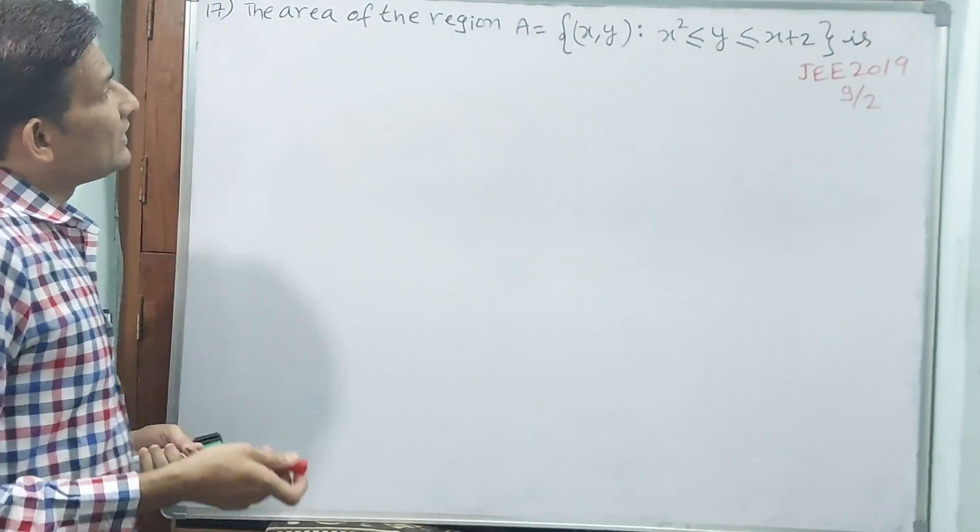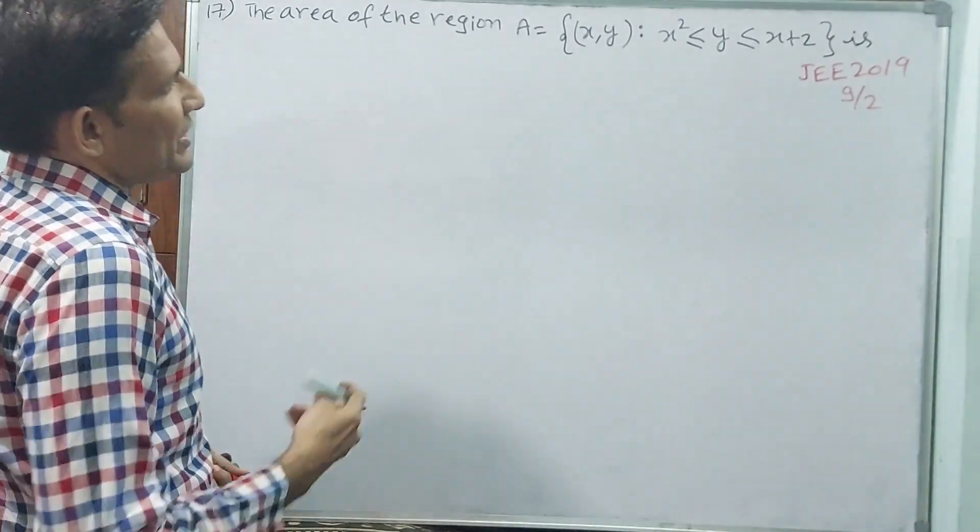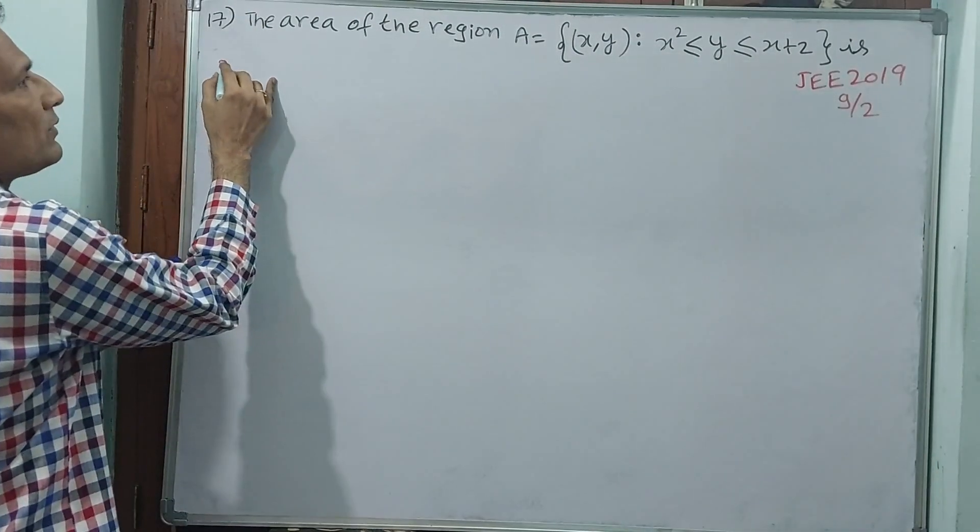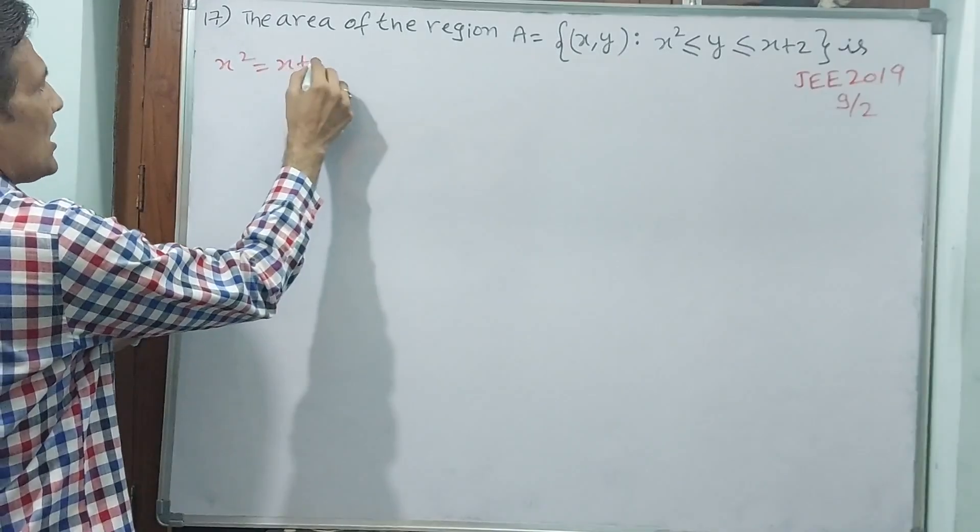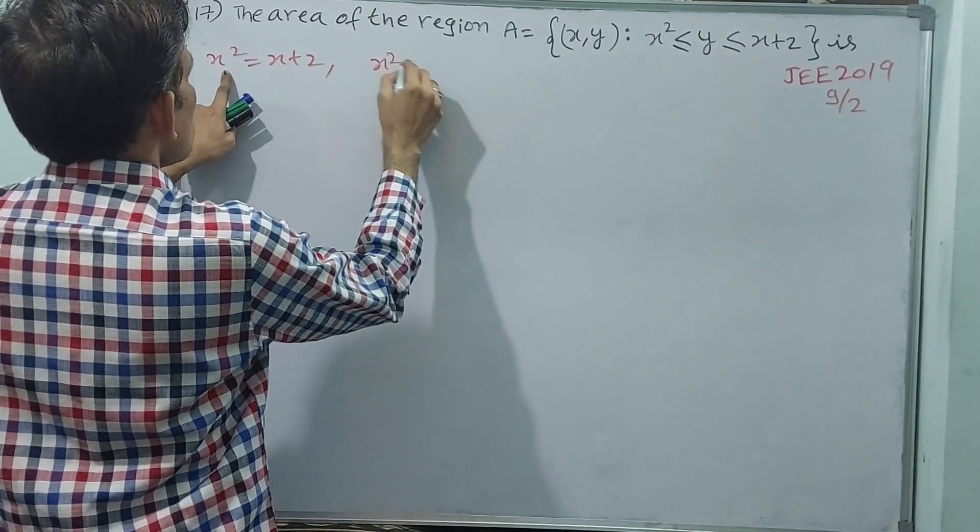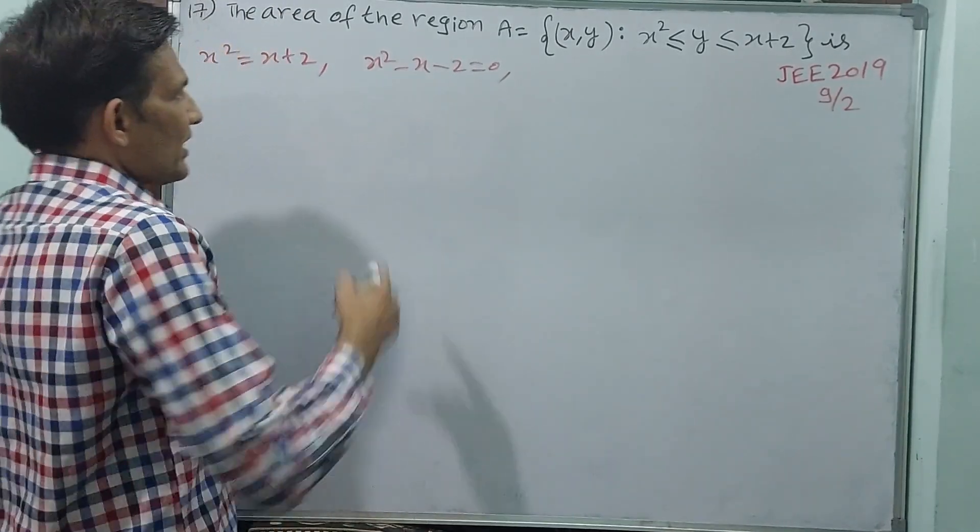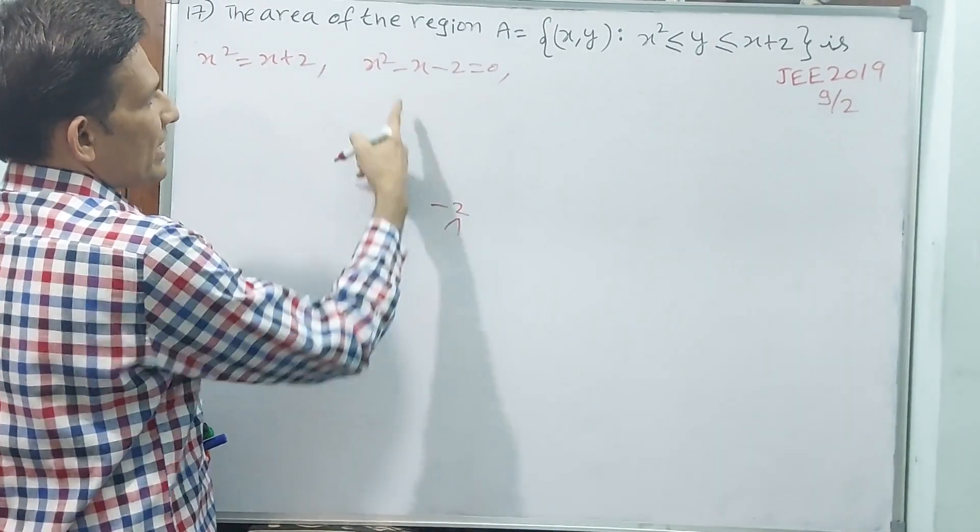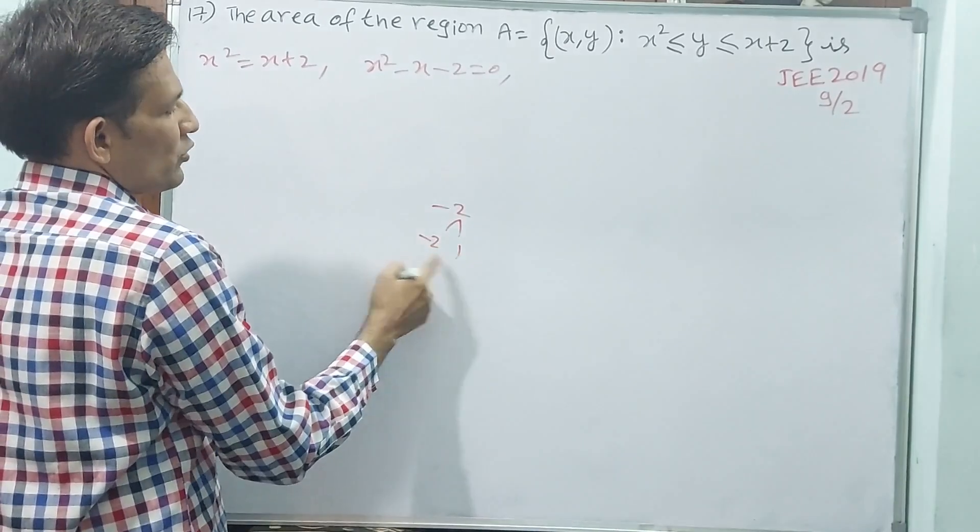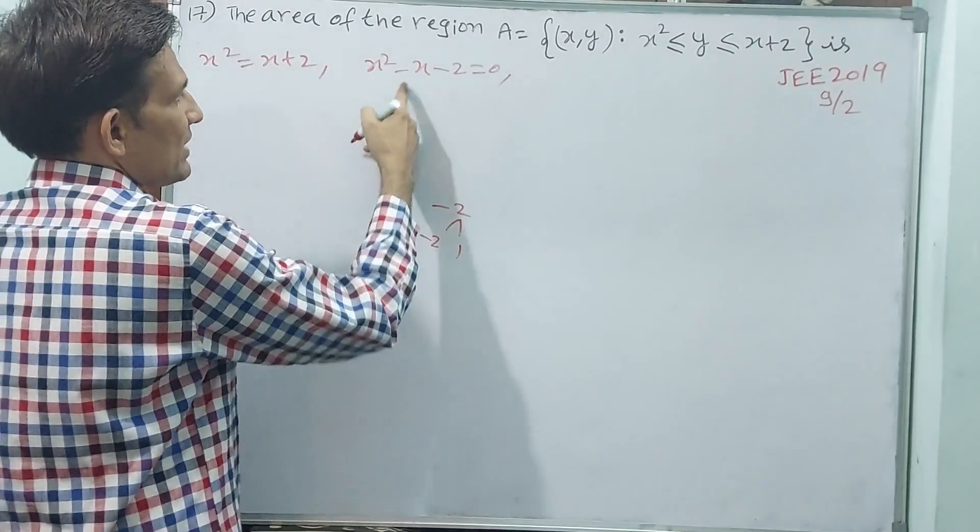Let us see. This question, C shall be equal when both are equal, which is x square equals x plus 2. That is x square minus x minus 2 equal to 0. Solve this quadratic equation. Minus 2 has to come and minus 1 has to come. See, minus 2 into 1 is minus 2, minus 2 plus 1 is minus 1.